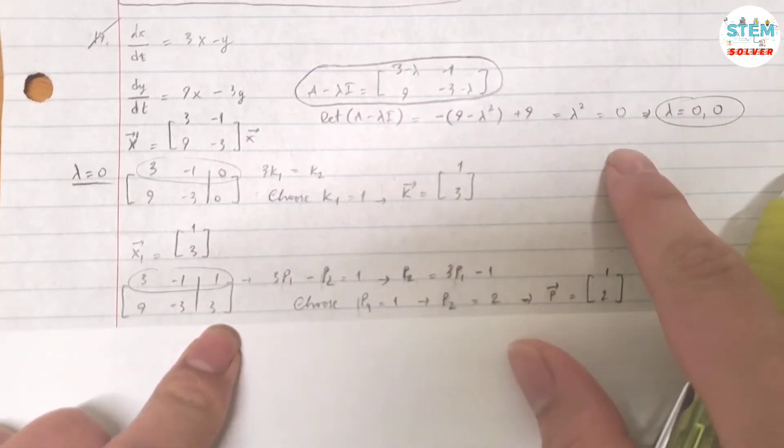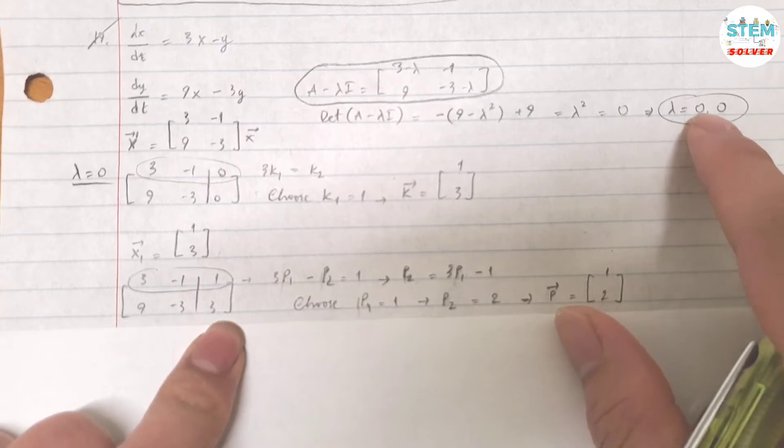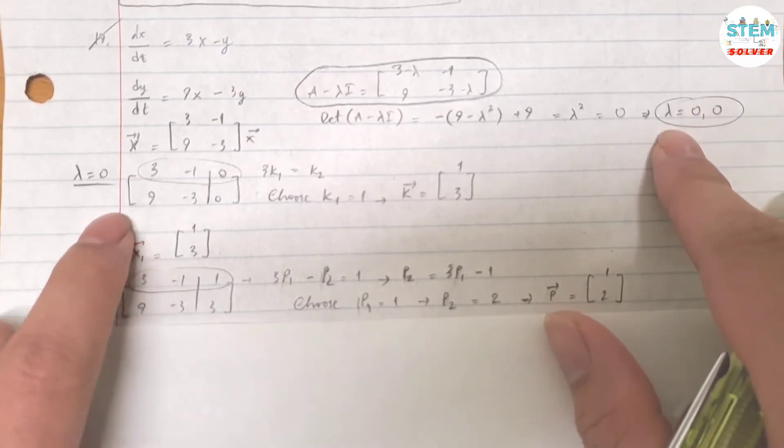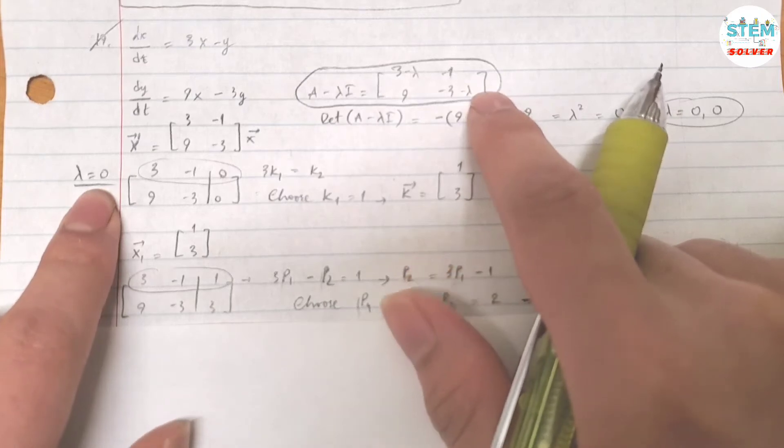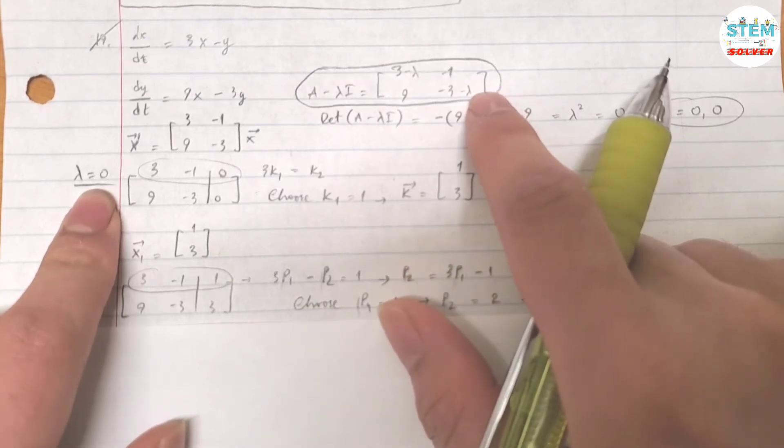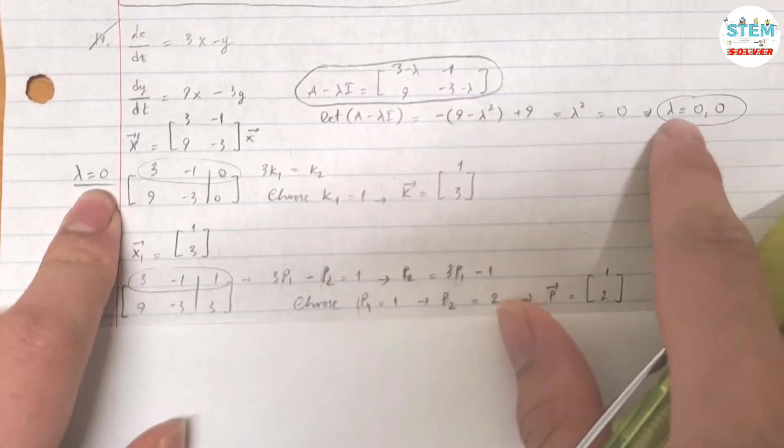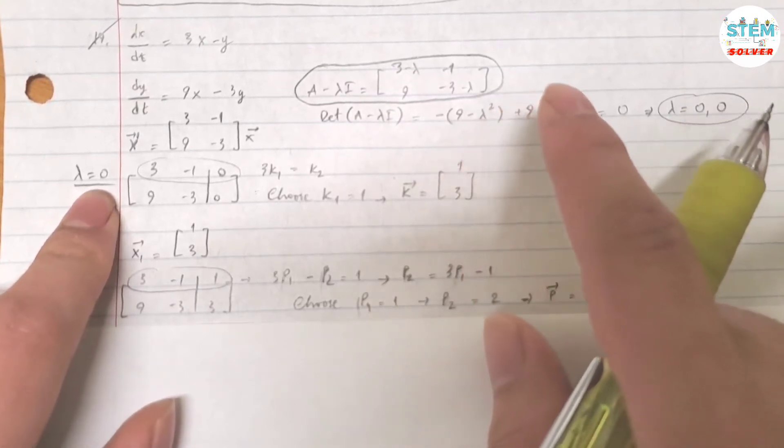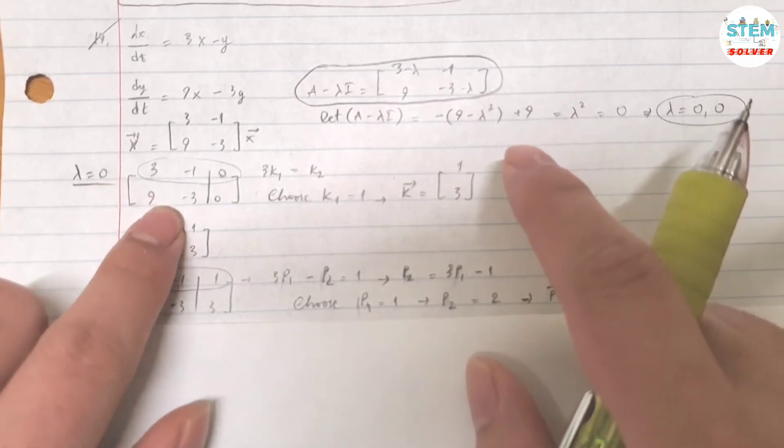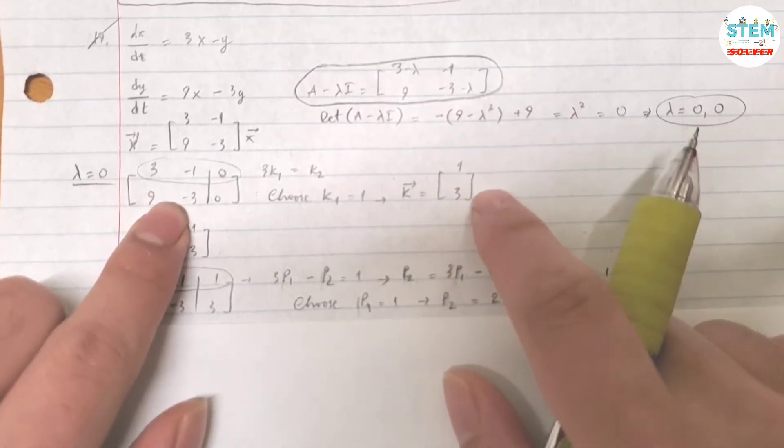Because this is a repeated eigenvalue, you cannot just use lambda equals 0 and plug it in one time. How do you find the other eigenvector for repeated eigenvalues? You are going to augment this with what you just found.